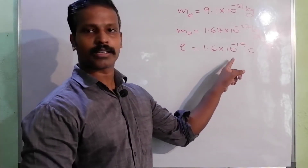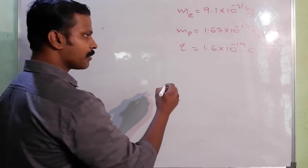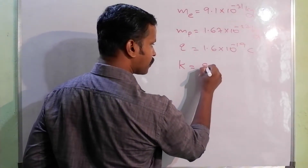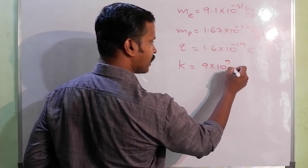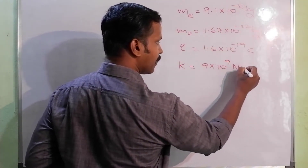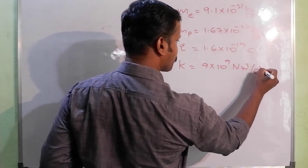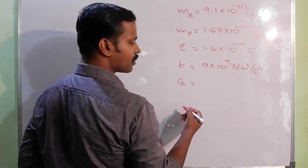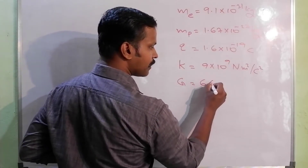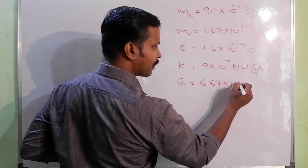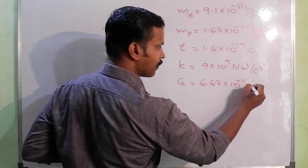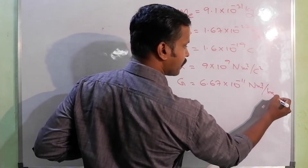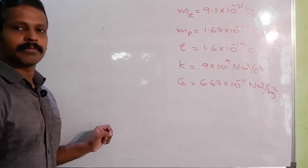1.6 into 10 raise to minus 19. Now the electrostatic constant K is equal to 9 into 10 raise to 9 Newton meters square per kilogram square. Universal gravitational constant G is equal to 6.67 into 10 raise to minus 11 Newton meters square per kilogram square.